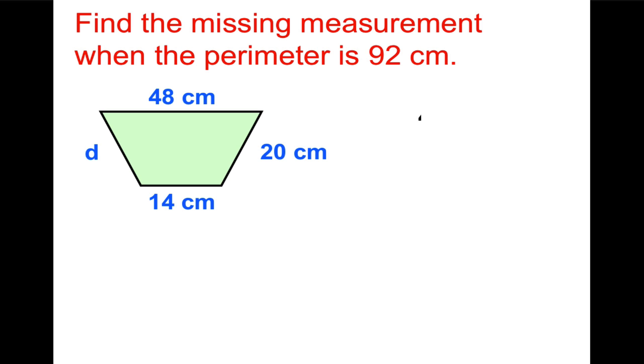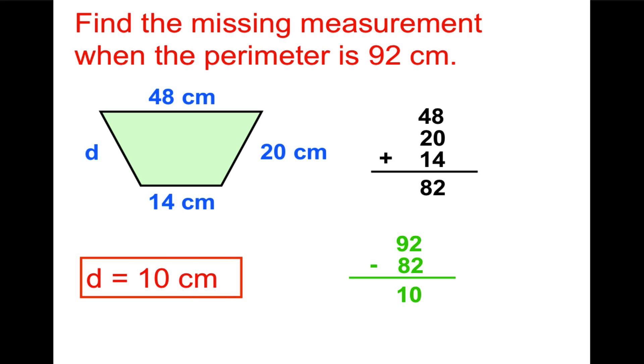I would add the three sides I know: 48 plus 20 plus 14. That equals 82. And I would subtract that from 92, because 92 is the perimeter. So we add the three sides we know, subtract from 92, and we get 10. So, 10 what? What do we measure when we're measuring perimeter? It's units to the first power, so in this case centimeters. 10 centimeters would be the length of side d.